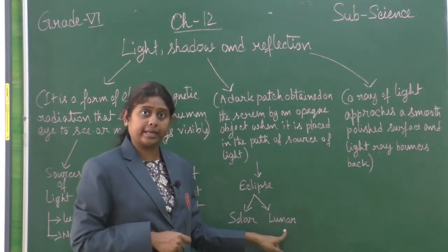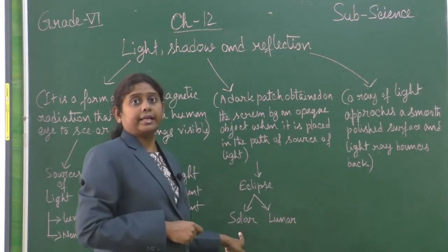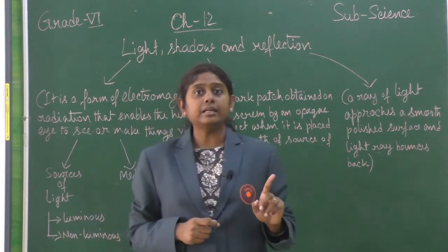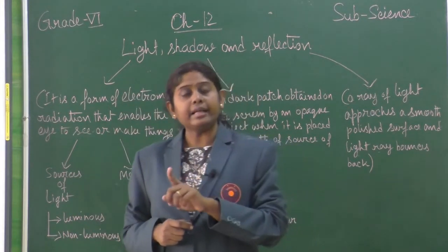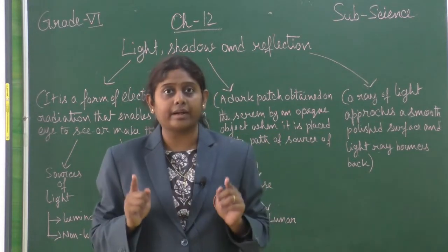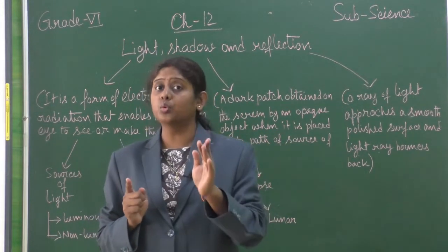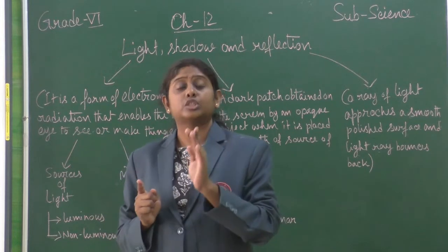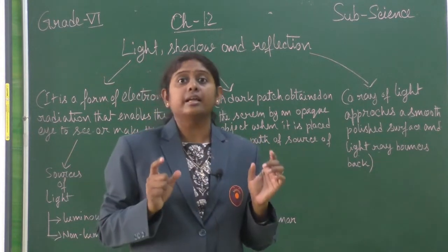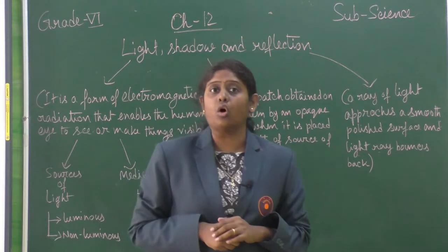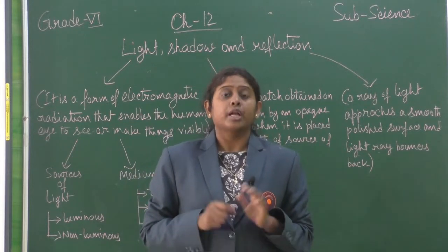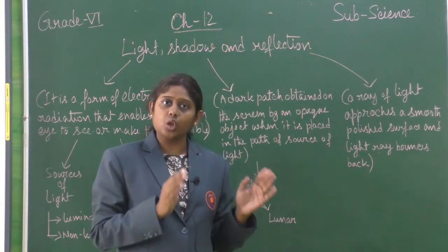Solar eclipse and lunar eclipse. Solar eclipse: when the sun, the moon, and the earth come in a straight line and the moon casts its shadow over the earth, this natural phenomenon we call solar eclipse.